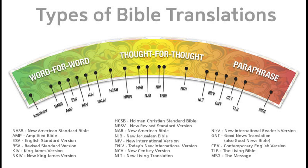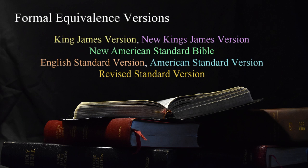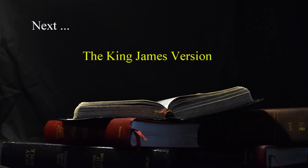For that reason, the formal equivalence translations will be closer to what the original states. My recommendation is to select a version from the formal equivalence, or word-for-word, method of translation. These will provide a closer rendering of what was stated in the source text and also limit subjective alteration of the meaning. These versions include the New King James Version and the New American Standard Bible, as well as others. In the next video, we'll talk about the King James and the New King James Version of the Bible.